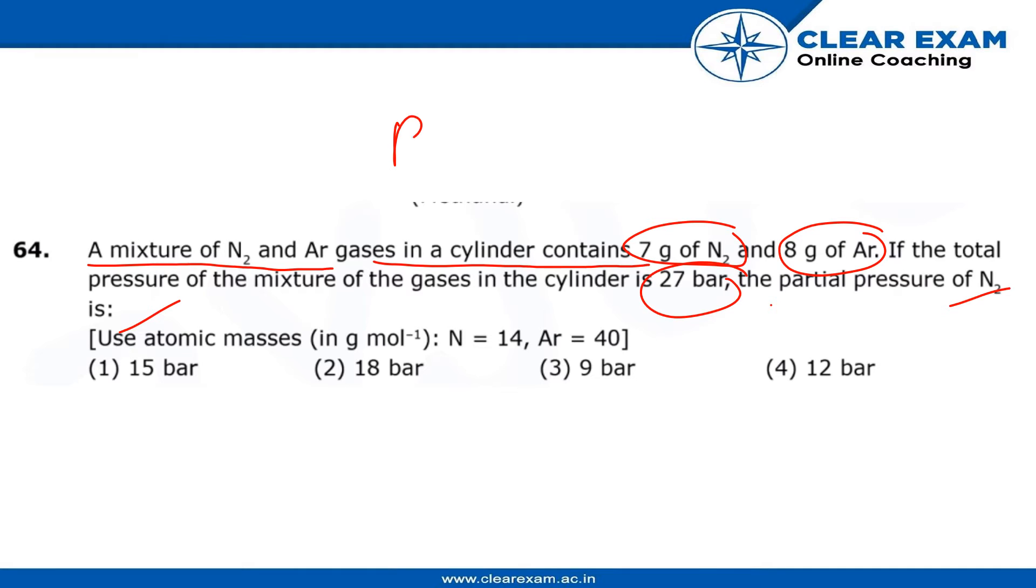We know that partial pressure of any compound, to find the partial pressure of N2, PN2 is nothing but XN2 into total pressure P total.